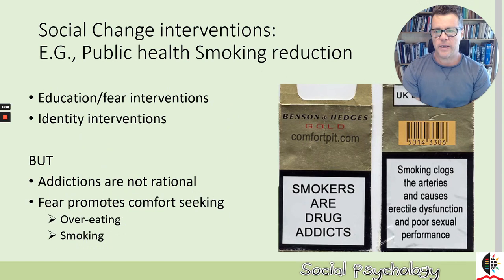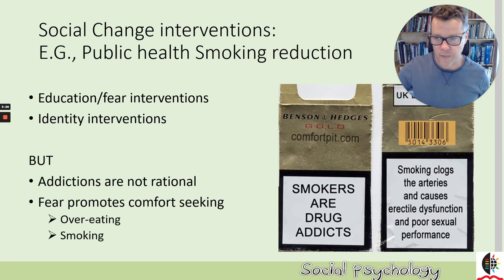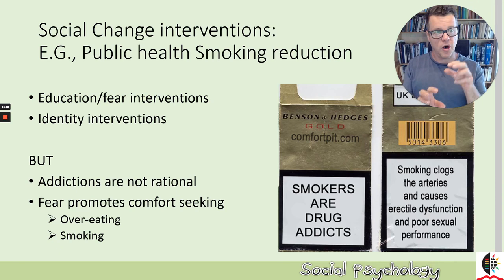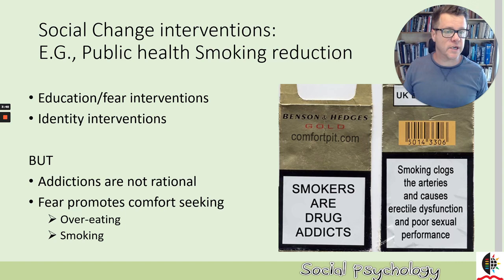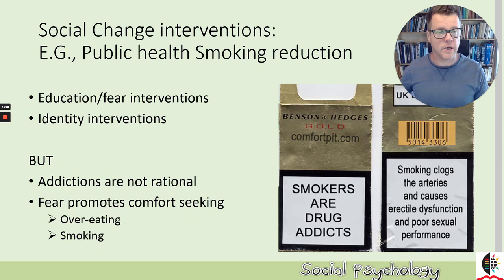How can we intervene? What kind of interventions can we put in place? There are education and fear interventions. There was a time when they started putting big warning signs on tobacco products — 'smokers are drug addicts' — which is an identity intervention: what kind of person is a smoker? Another one targets erectile dysfunction: what kind of man is a smoker? So these interventions are not just fear-inducing; they also target forms of identification. But this assumes smoking behavior is rational — that if we give people enough good advice, they will stop their unhealthy practices. But that's not true. Very often fear promotes overeating and more smoking, so you can have the contrary consequence.